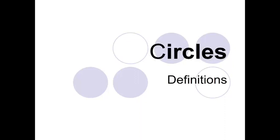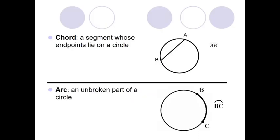In this video we're going to look at the basic parts of the circle and circle definitions. A chord is a segment whose endpoints lie on a circle. We have chord AB here which we could show with this notation. Point A and point B are both on the circle, so this segment would be considered a chord.